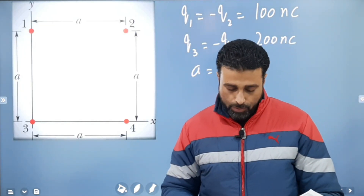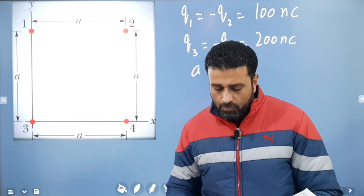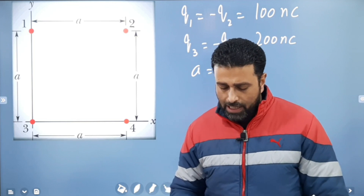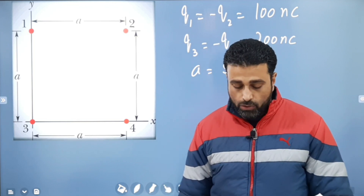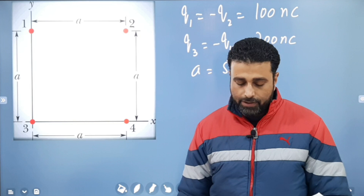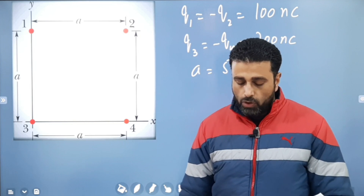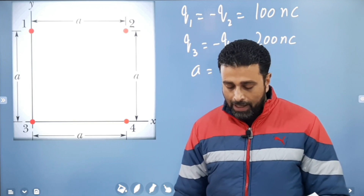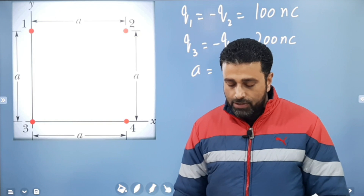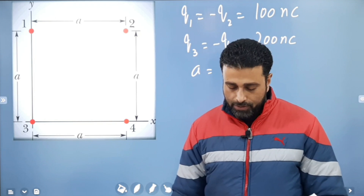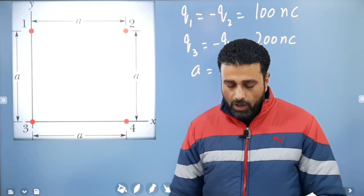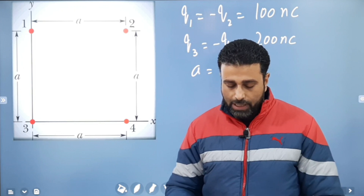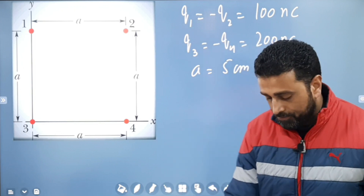Let me read out the problem. In the figure, the particles have charges Q1 equal to minus Q2 equal to 100 nanocoulombs, and Q3 equal to minus Q4 equal to 200 nanocoulombs, and distance A equal to 5 centimeters. What are the X and Y components of the net electrostatic force on particle 3?